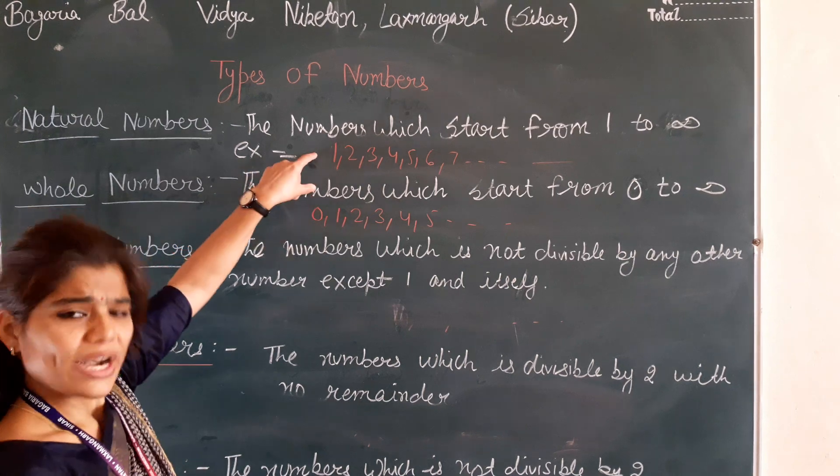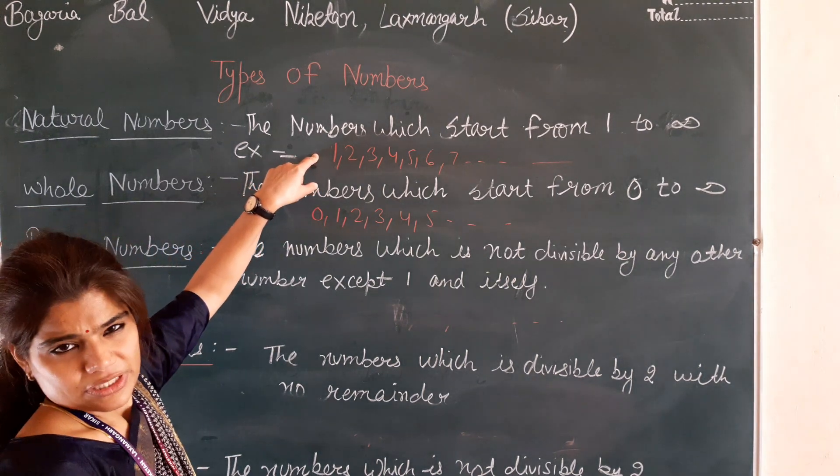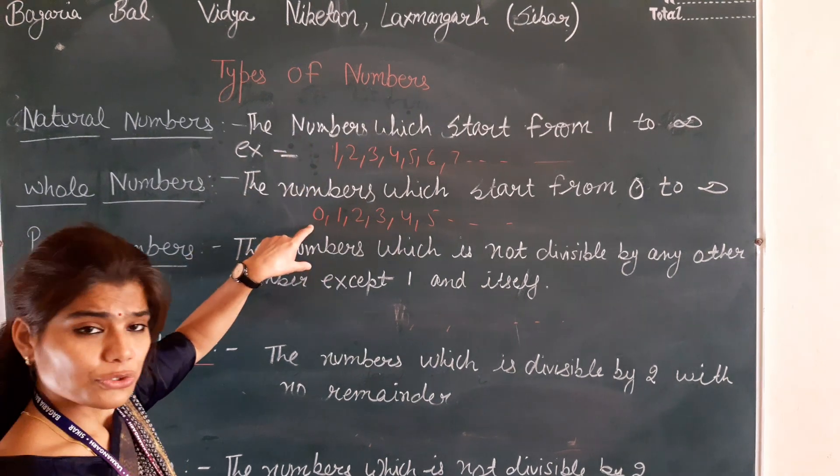If we add 0 to natural numbers, this will also be your whole number. So remember, natural numbers start from 1 and whole numbers start from 0.